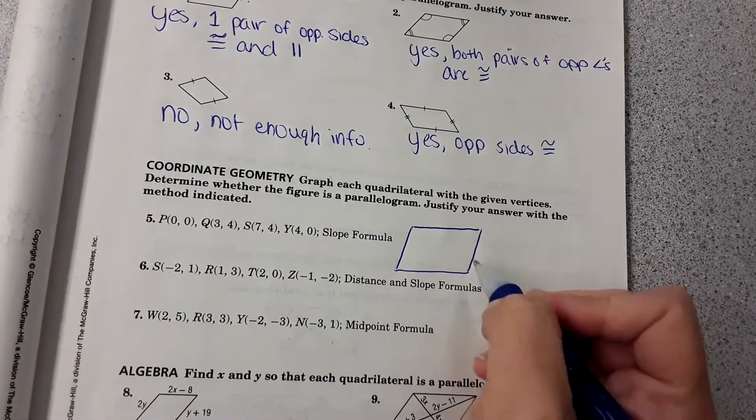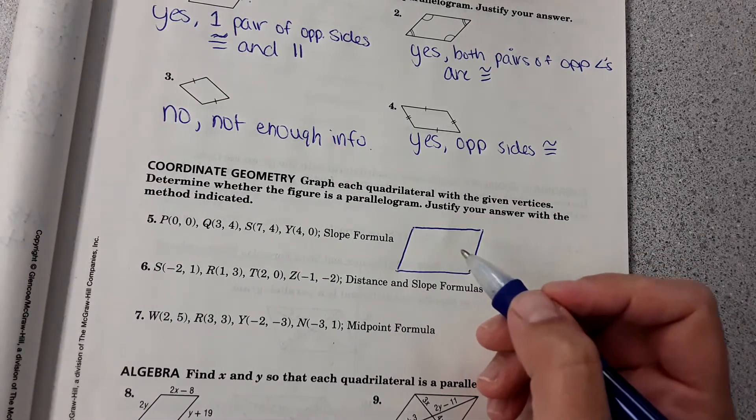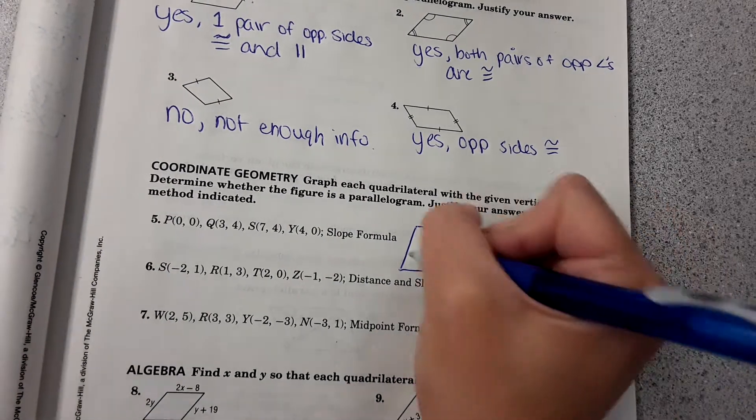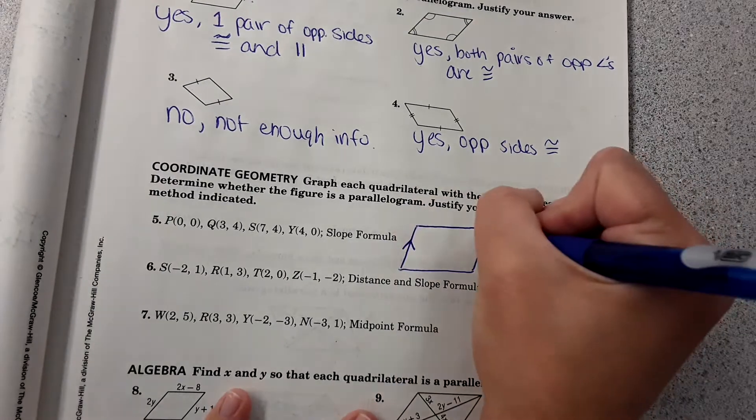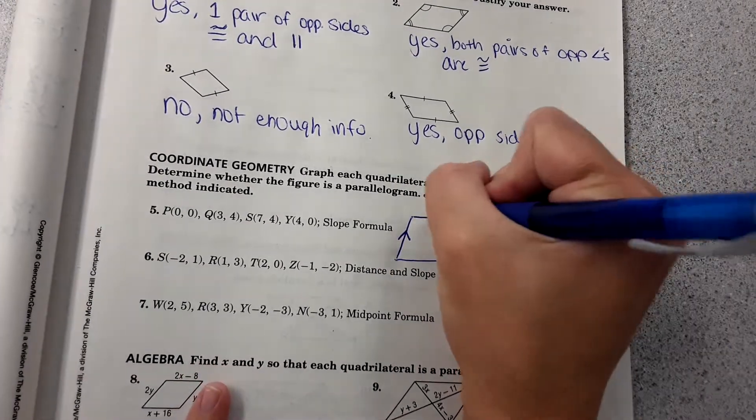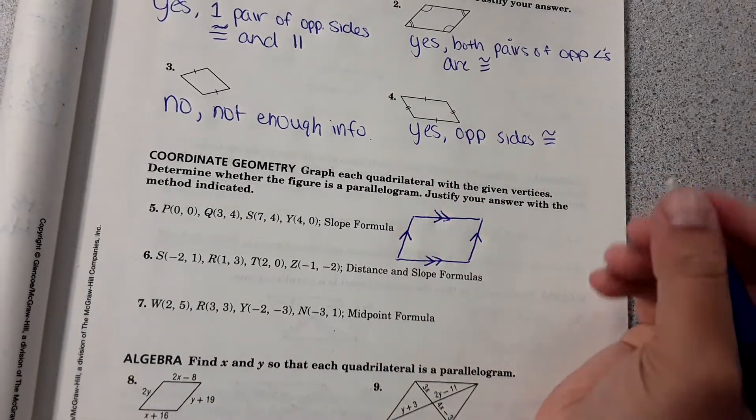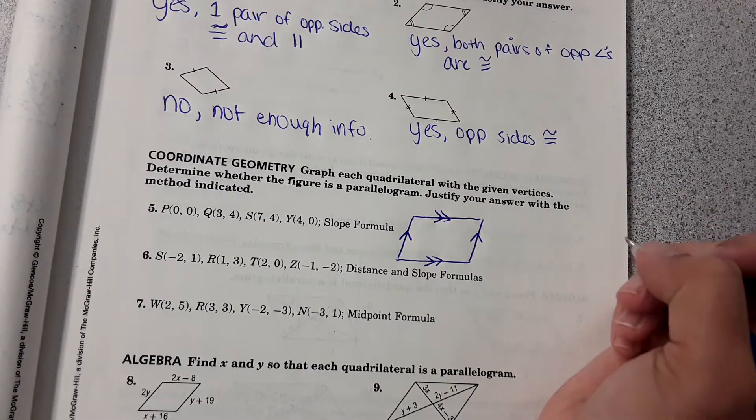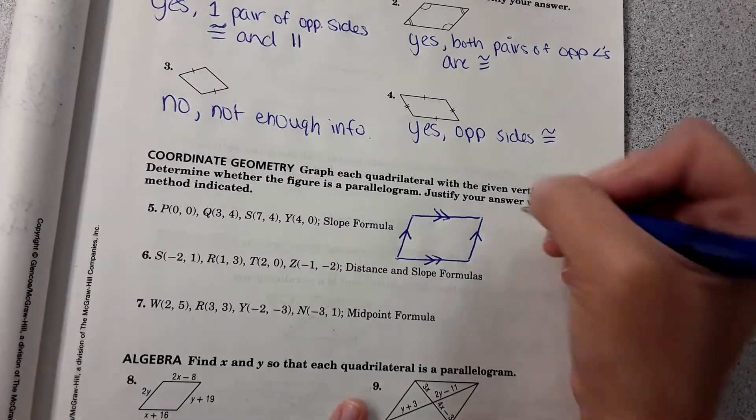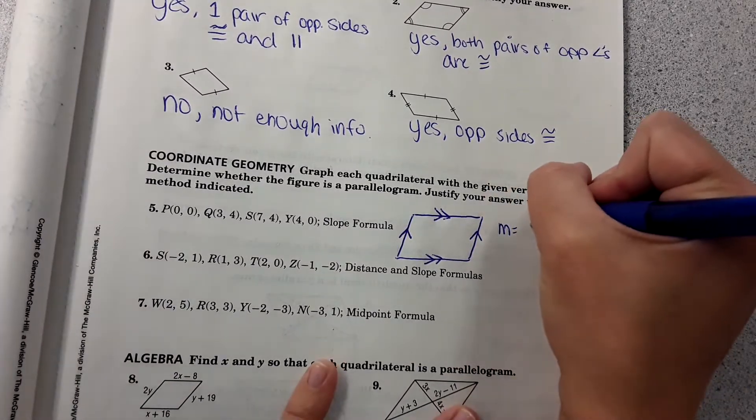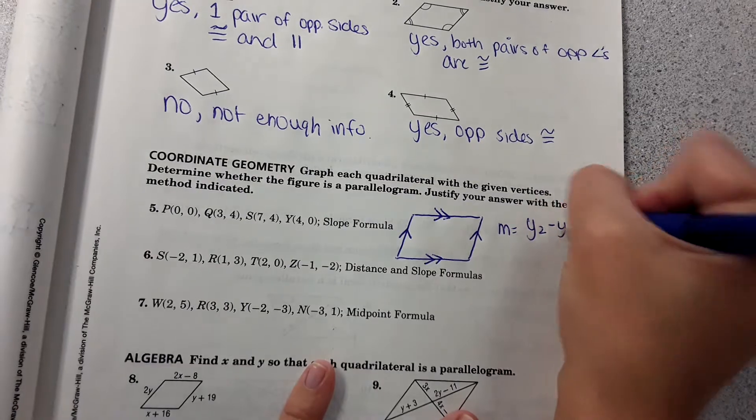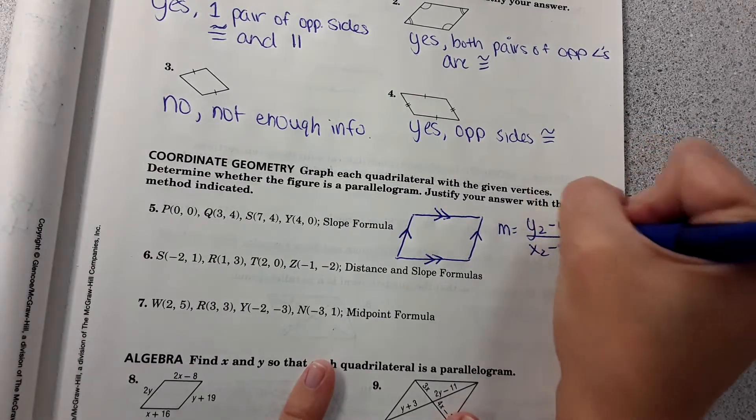But it's saying that you can prove this is a parallelogram from slope formula. And what they mean by that is if the slope of this line and the slope of this line is the same and the slope of this line is the same as the slope of this line, that means you have opposite sides parallel and you have a parallelogram. The equation for slope, if you were to need it, would be y2 minus y1 over x2 minus x1, and that would give you the slope of a line.